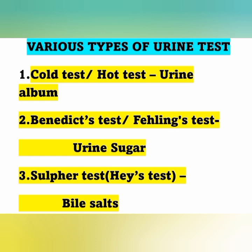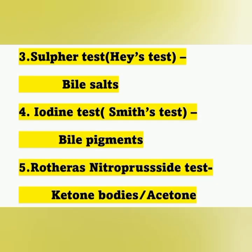First, some important points regarding types of urine tests. The cold test and hot test are used for urine albumin. Benedict test or Phalanx test is used to detect urine sugar. Sulfur test or Haze test is for bile salt. Iodine test or Smith test is for bile pigment. Rothera's nitroprusside test is for ketone bodies or acetone.